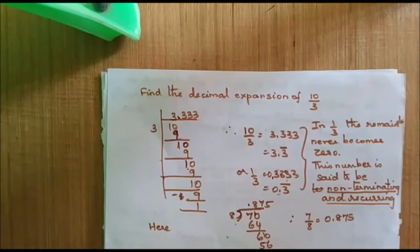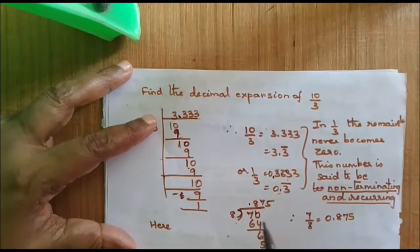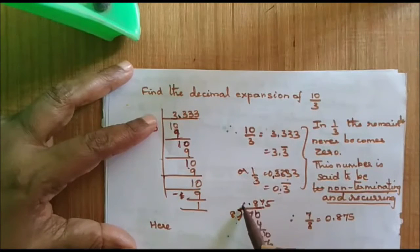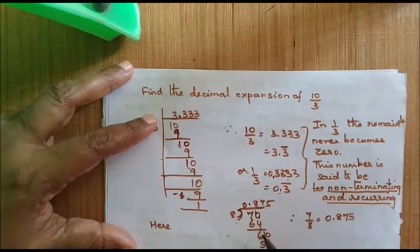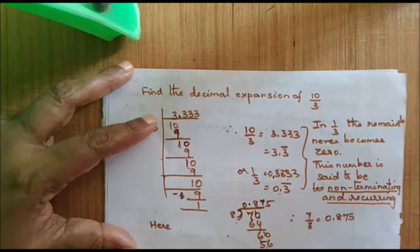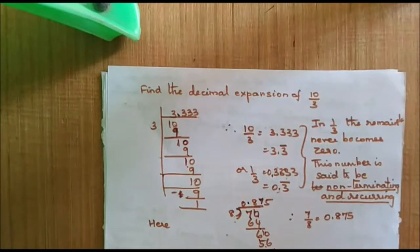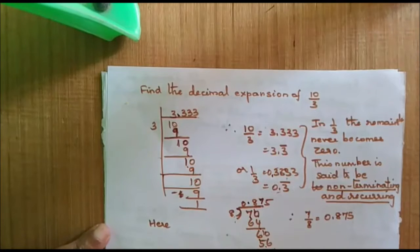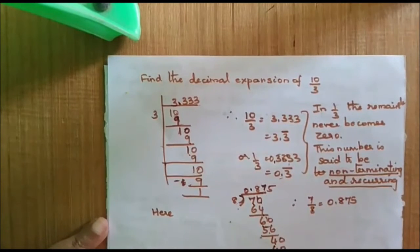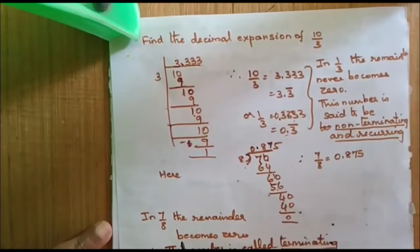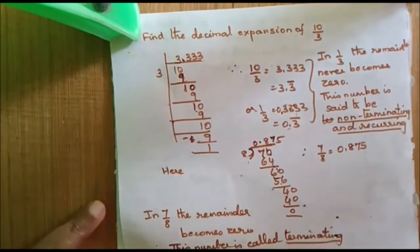Now let us take another example: 7 by 8. 8 will not go in 7, so I will put a point and a 0 here. It will go 8 times — that is 64. The remainder is 6. Once again I put 7 times, it goes 56. The remainder is 4, add a 0. Now the answer for 7 by 8 is 0.875. In this case we get the remainder as 0, so 7 by 8 is a terminating number.